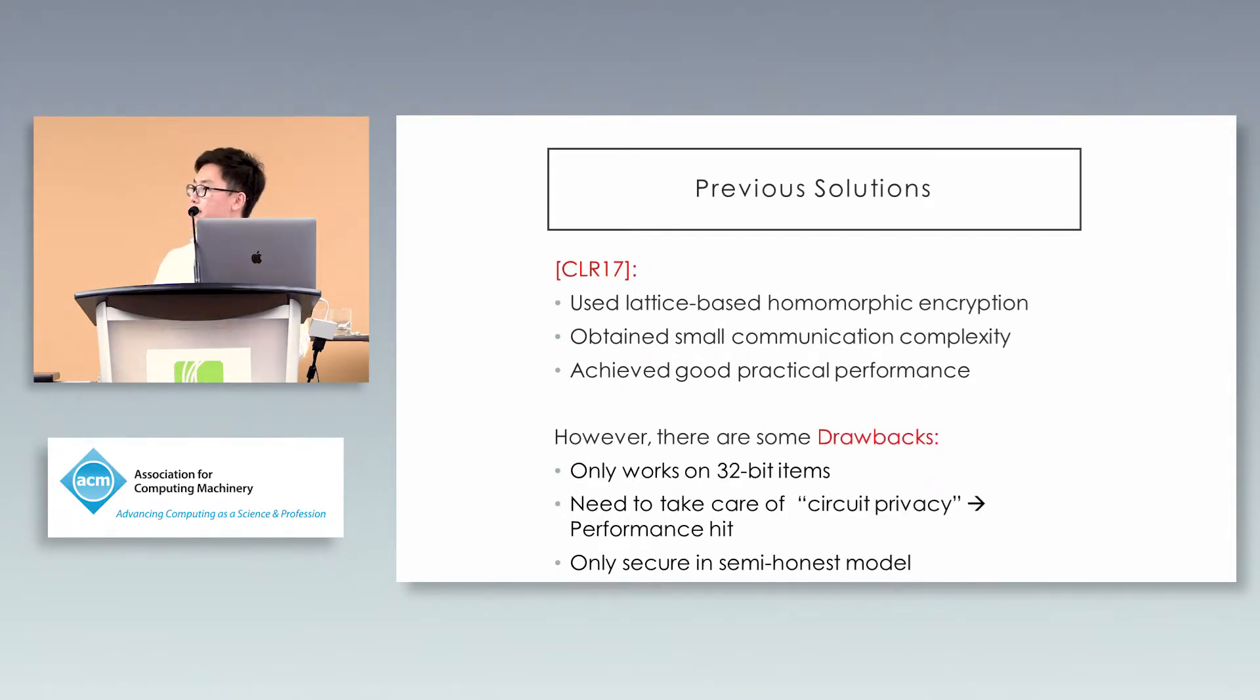However, there are some drawbacks. The previous protocol only works on 32-bit items, which is kind of short. We need to take care of circuit privacy in FHE, which means smudging your ciphertext with noise so the receiver cannot get more information than it should. This gives a performance hit. Our protocol is only secure in the semi-honest model.